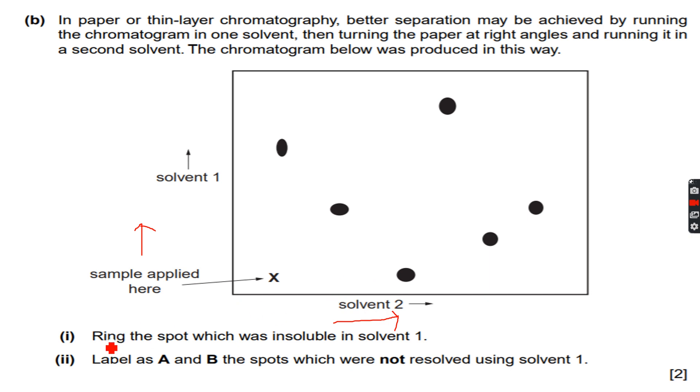So ring the spot which was insoluble in solvent 1, which means it did not move from the reference in solvent 1. Now you can see that first all of them went up. This spot went up, this spot went up, because this is the reference line. This spot went up, this spot did not move from the reference, this spot moved, this spot moved, and even this spot moved.